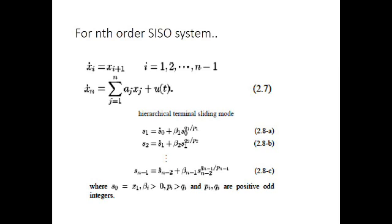The sliding variable S discussed previously was for a second order system. If we have an nth order system, as given in equation 2.7, then we use a hierarchical terminal sliding mode defined by equations 2.8a through 2.8c, giving sliding variables S1, S2, up to S_{n-1}. The coefficients beta_i for i from 1 to n-1 are positive, and P_i and Q_i are positive odd integers with P_i always greater than Q_i.